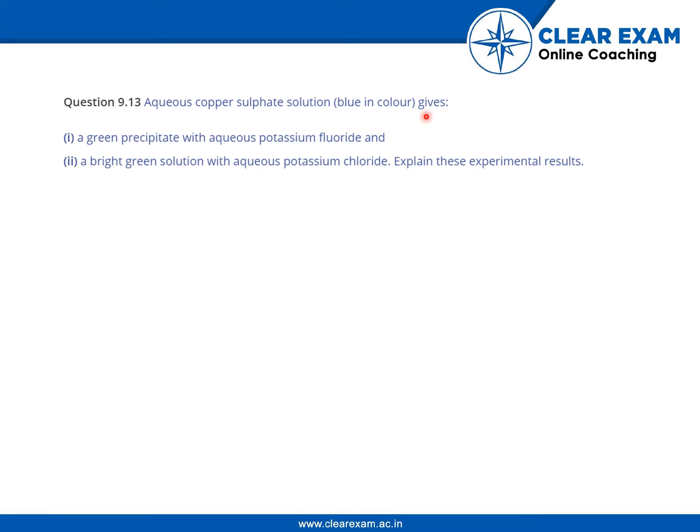The question is: aqueous copper sulfate solution, which is blue in color and is also known as blue vitriol, gives (i) a green precipitate with aqueous potassium fluoride and (ii) a bright green solution with aqueous potassium chloride. Explain these experimental results.